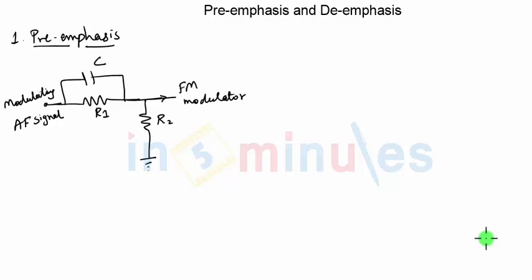Welcome to InfoMinutes. In this video clip we will discuss two important processes that take place in any frequency modulation system. These are called pre-emphasis and de-emphasis. Pre-emphasis takes place on the transmitter side and its reverse operation, de-emphasis, takes place on the receiver side. Let us understand why we need pre-emphasis first.